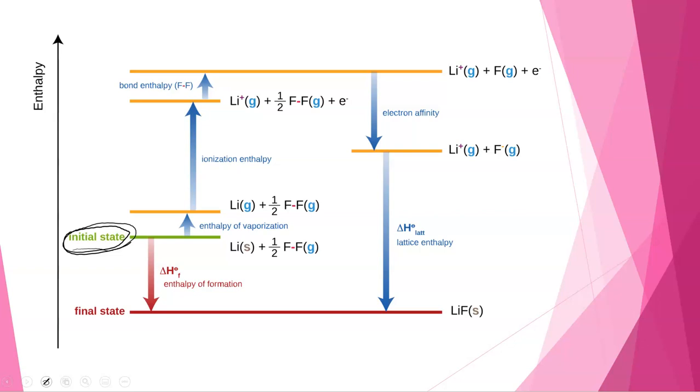The Born-Haber cycle is a series of steps, and we're going to follow those same steps in pretty much every situation. The first step here is the enthalpy of vaporization, and in that process our solid lithium becomes a gas. That's the only change that's happening.